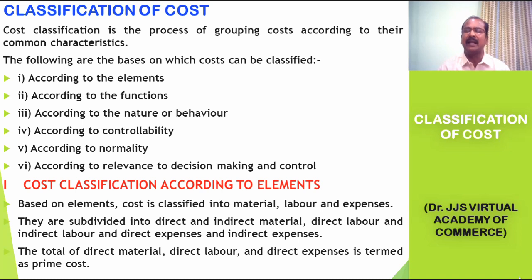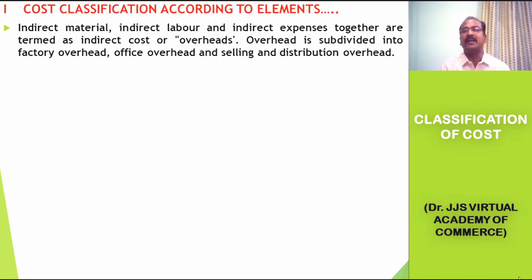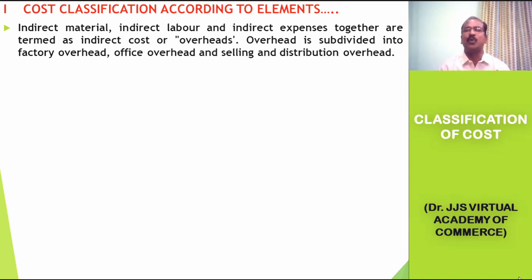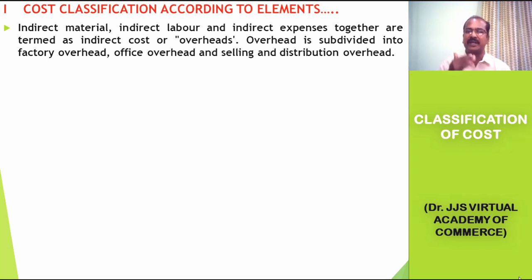The total of direct material, direct labor or direct wages, and direct expenses are collectively called the prime cost. When we total the amounts of indirect material, indirect labor, and indirect expenses, we name that total as overhead, which could otherwise be called indirect cost. Overhead is again subdivided into factory overhead, office overhead, and selling and distribution overhead.